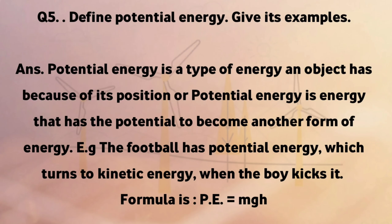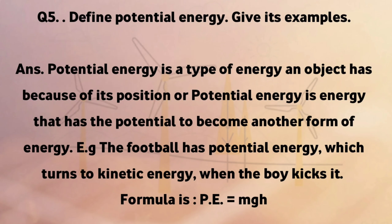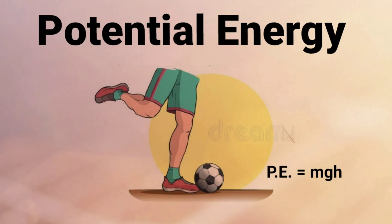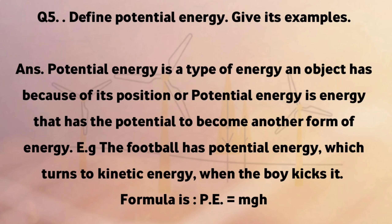Define potential energy and give its examples. Potential energy is a type of energy an object has because of its position, or it is energy that has the potential to become another form of energy. Example: the football has potential energy which turns to kinetic energy when the boy kicks it. The formula is PE equals mgh.